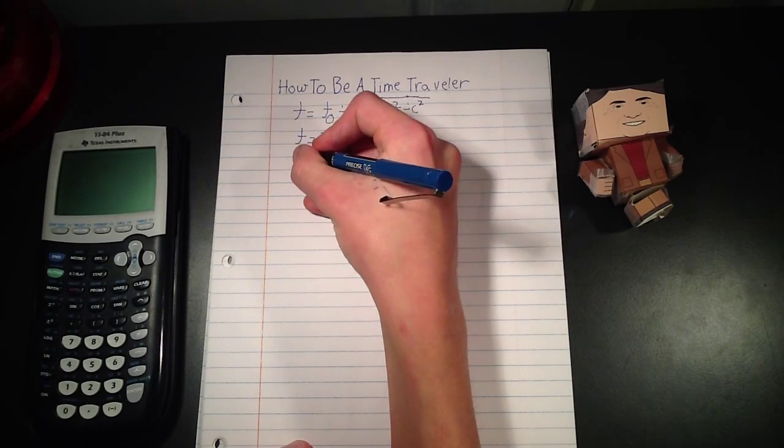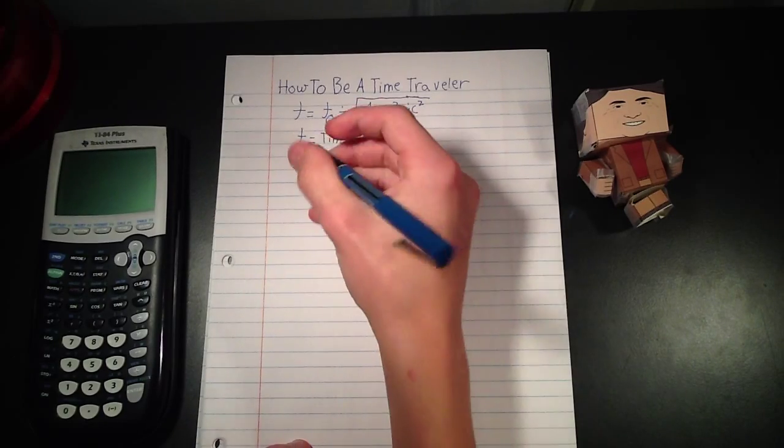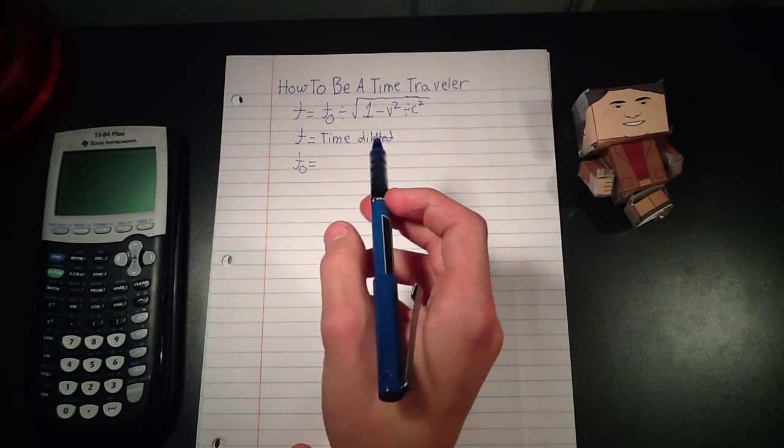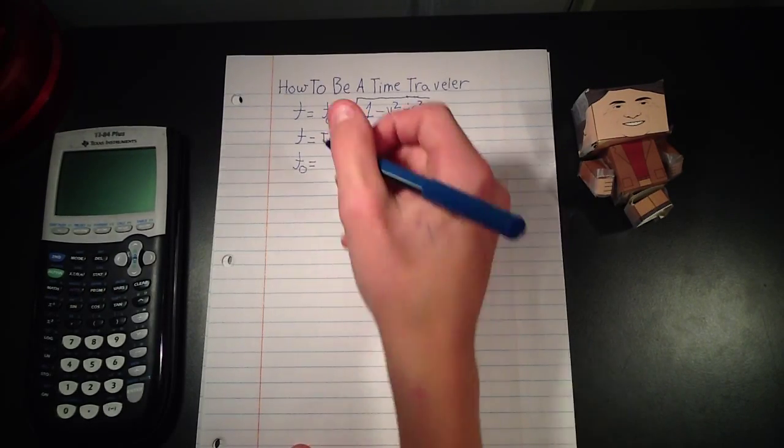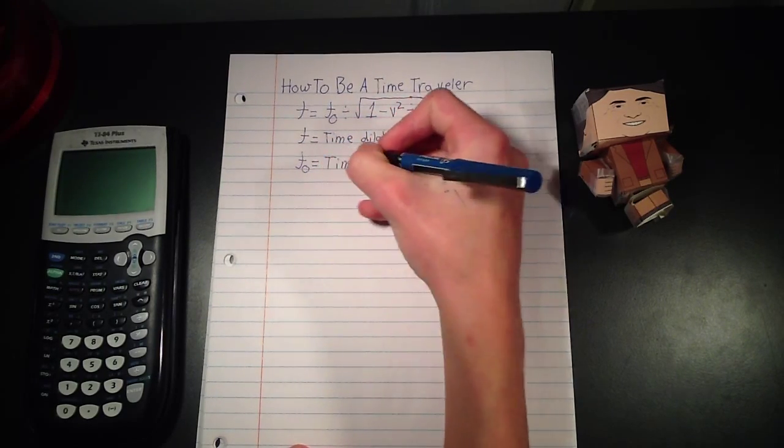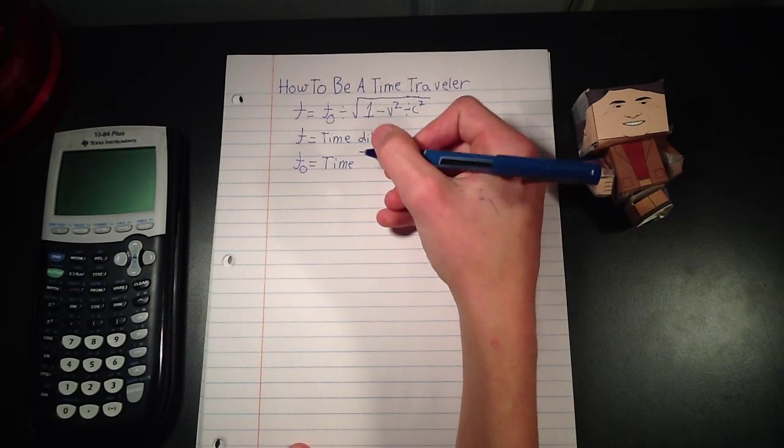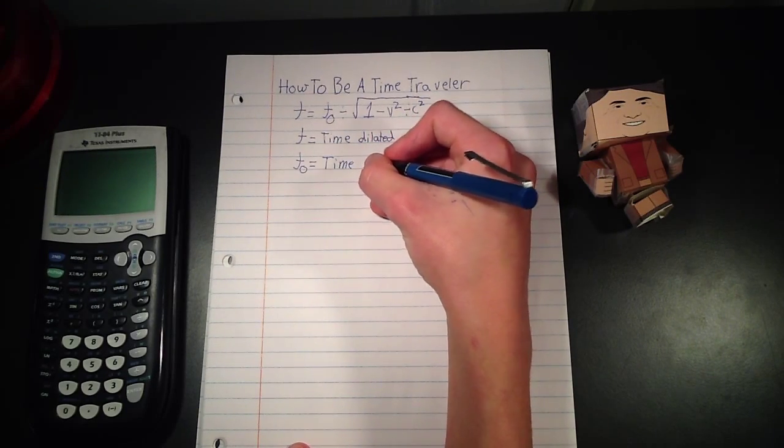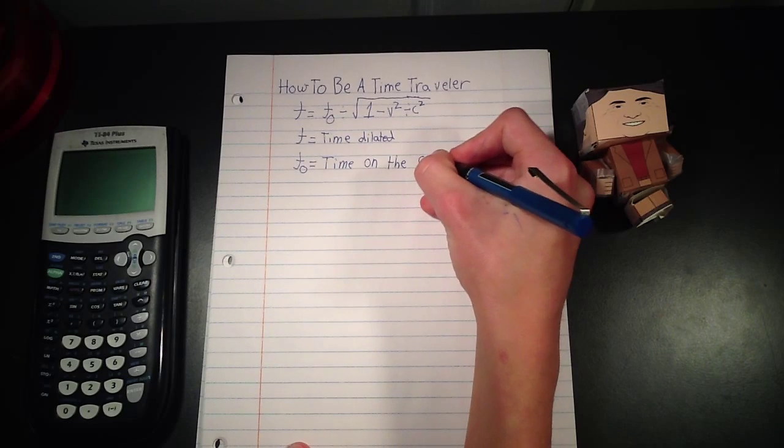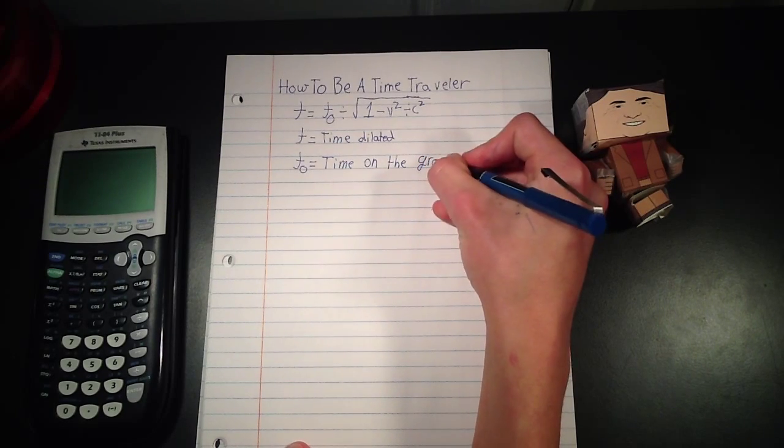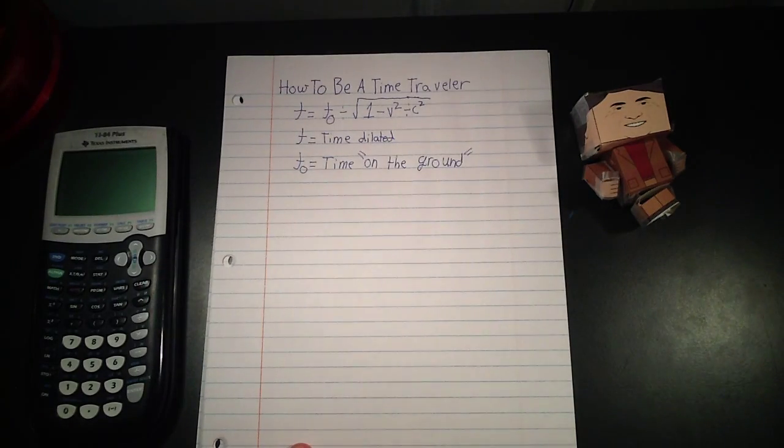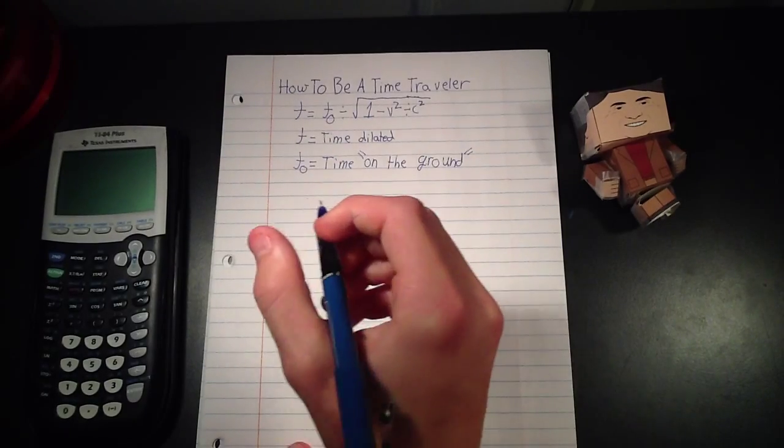Now t₀—you might recognize that subscript o from lambda at rest—that means time at rest, and that is the time on the ground. Time on the ground, even though it's not technically on the ground, it could be anywhere, but we'll just call it on the ground in quotes. Okay, v is the speed of the traveler.